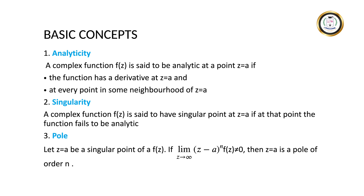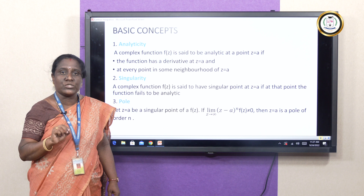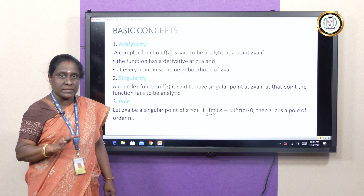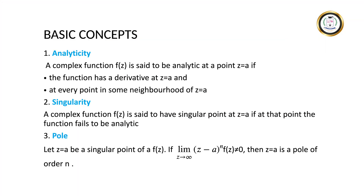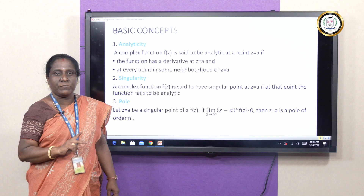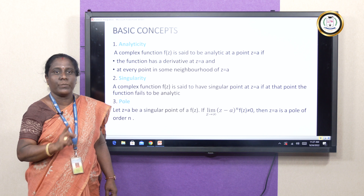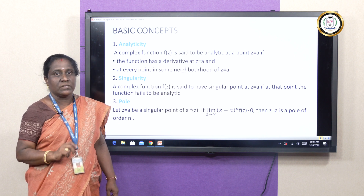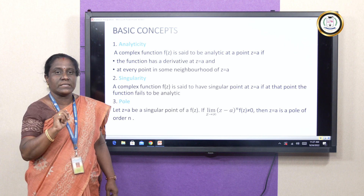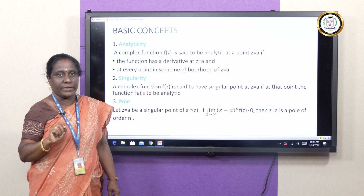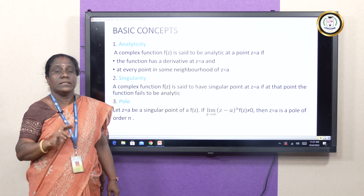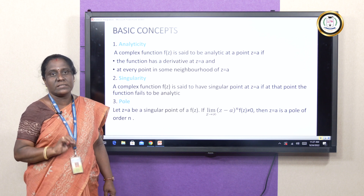The second definition is singularity. Whenever a function fails to be analytic at a point z = a, we call that point a singular point of the function. From these two definitions, we can identify that they are opposite in nature: if a point is analytic, it cannot be a singular point; if it fails to be analytic, it is called a singular point.